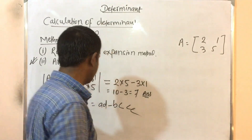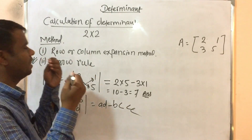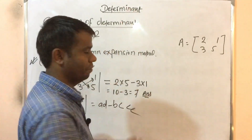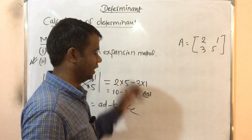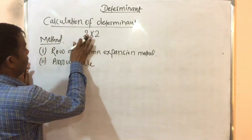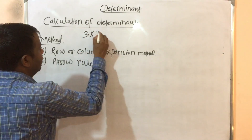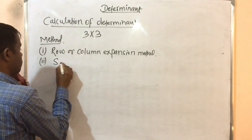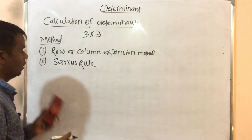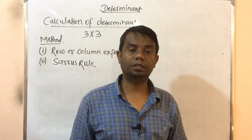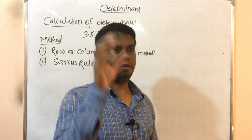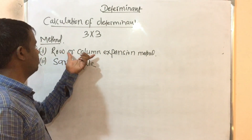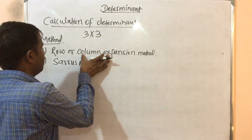This is the rule method for two by two determinants. Now for three by three, we have two methods: the row and column expansion method, and the Sarrus rule. The row and column expansion method is preferred for three by three. The Sarrus rule is also familiar and used for three by three determinants.